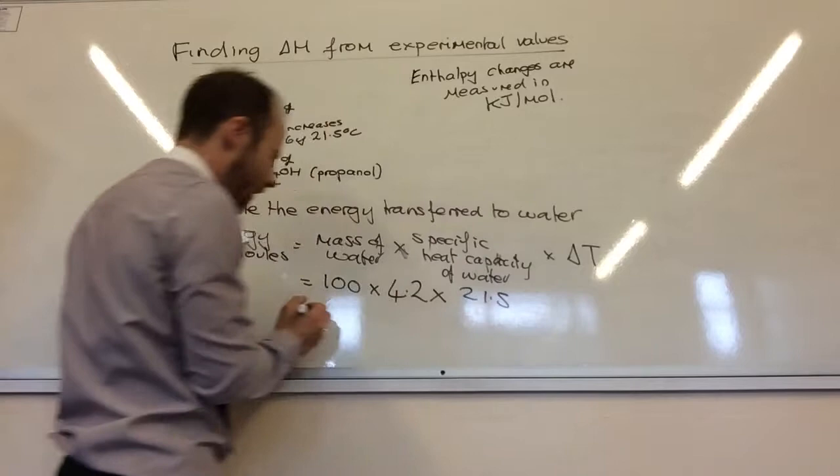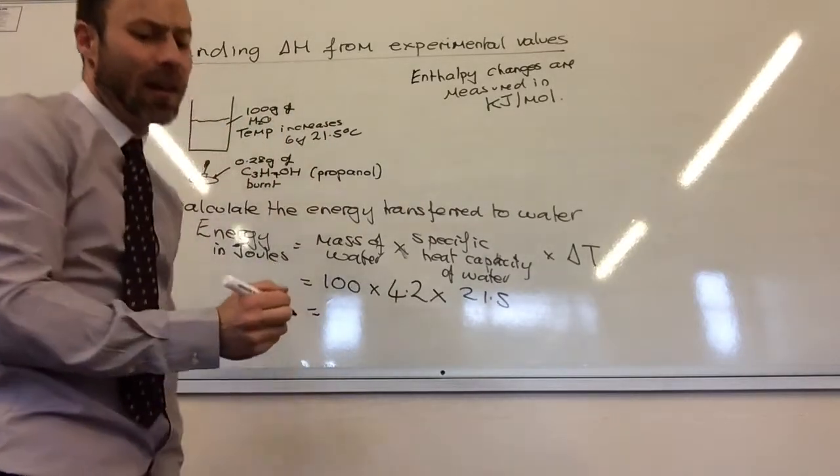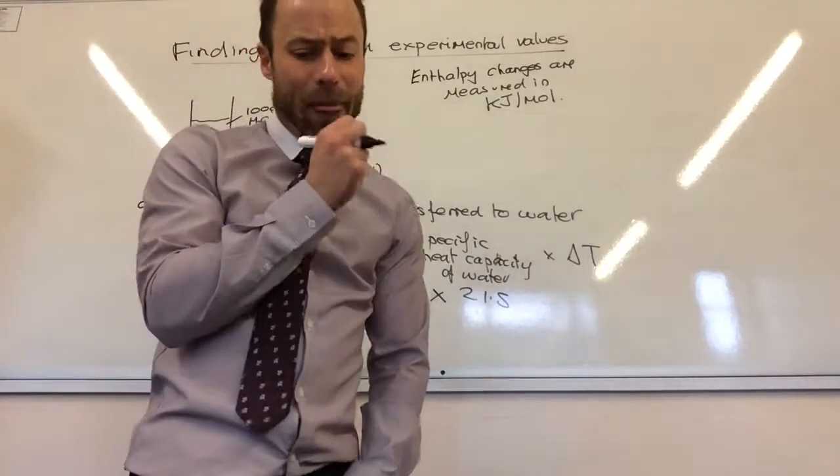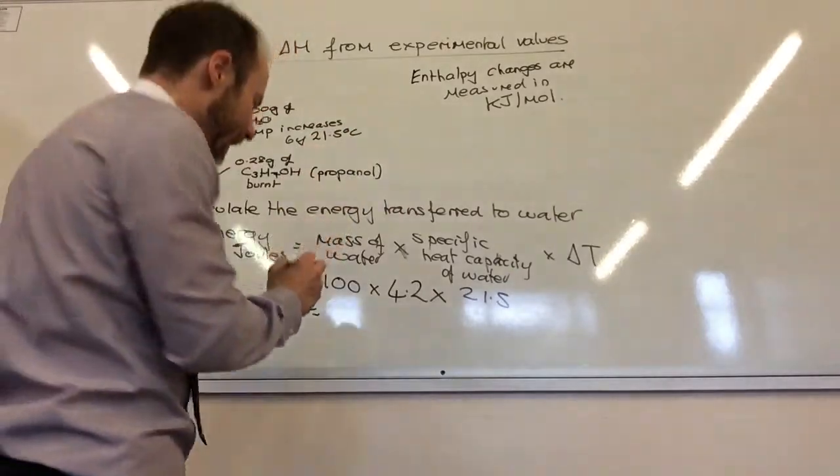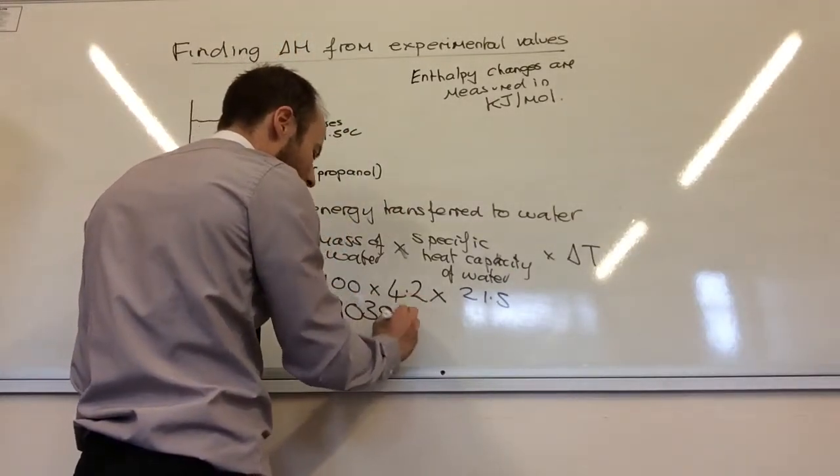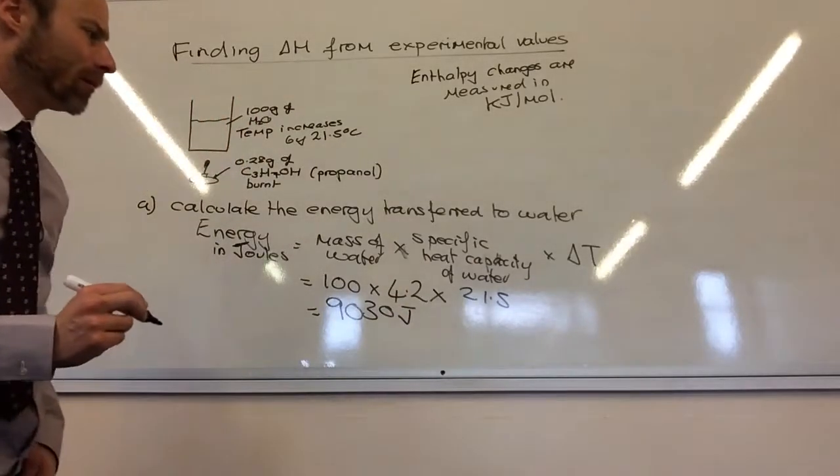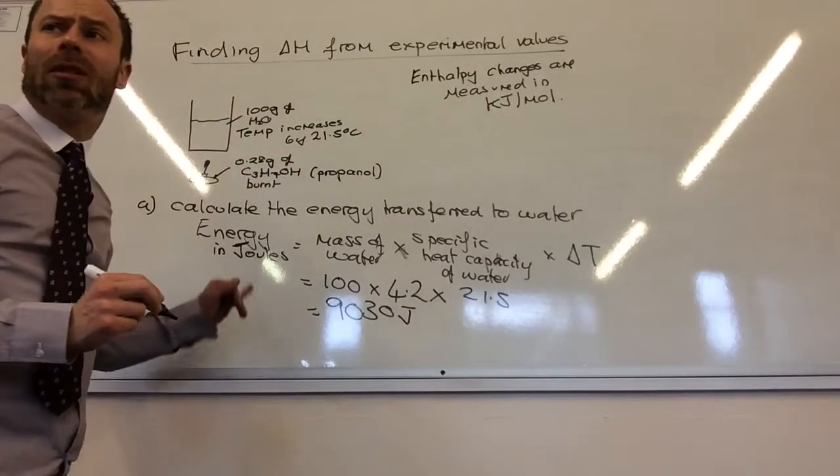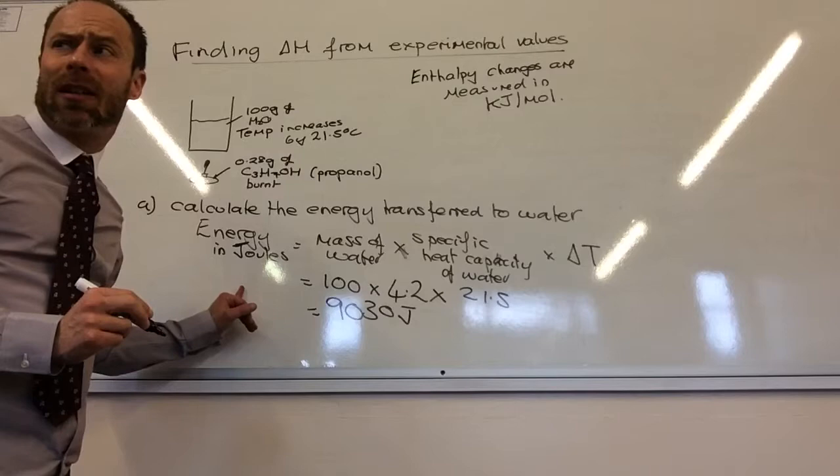The temperature change, they've told me, is 21.5 degrees C. If you do that, you end up with it being 9,030 joules. You would have done something similar at GCSE, I think.